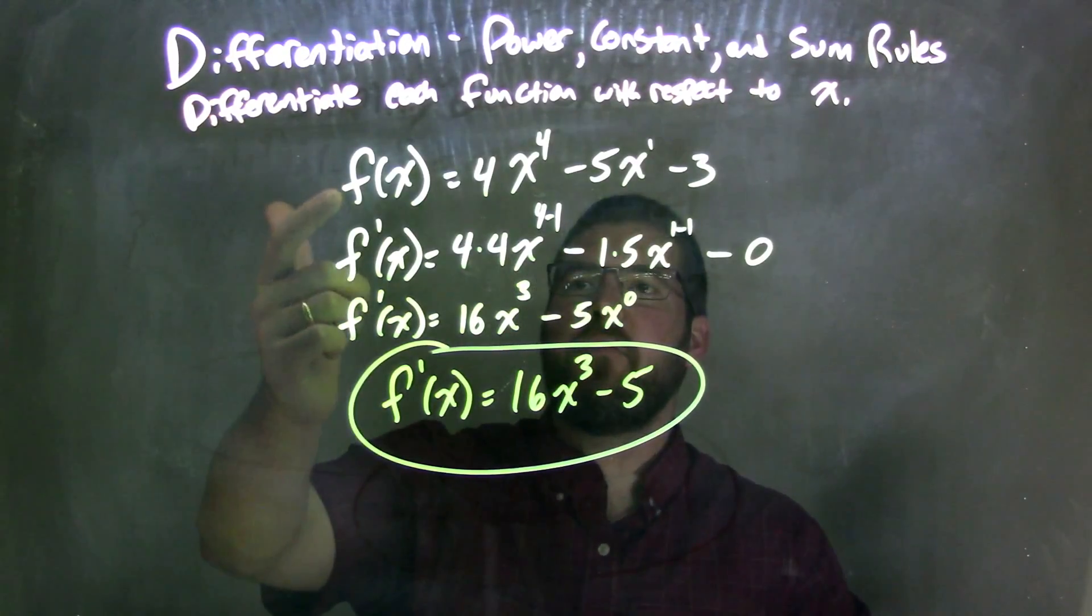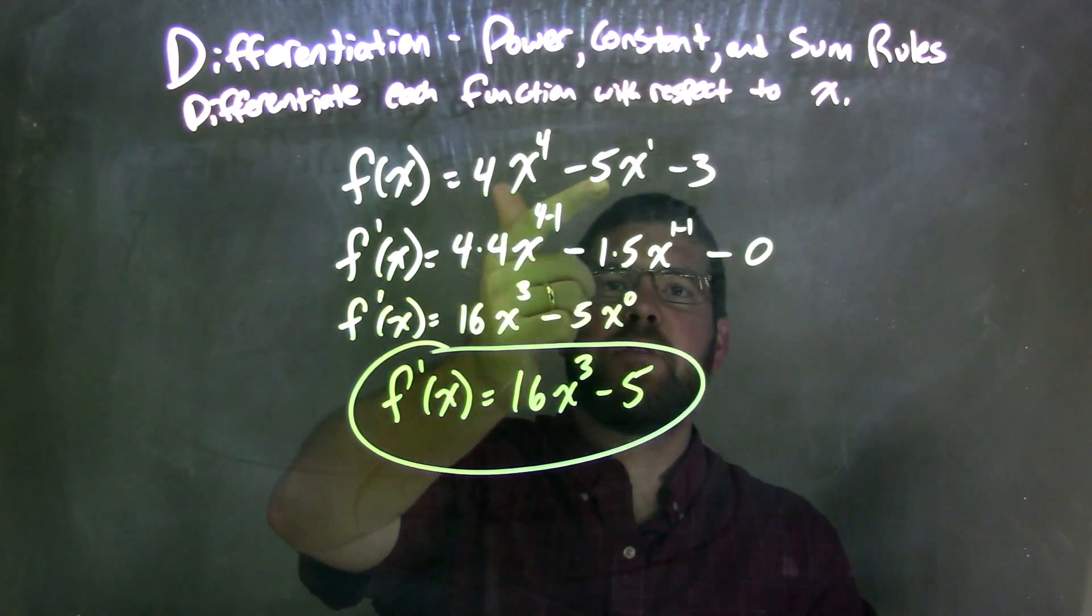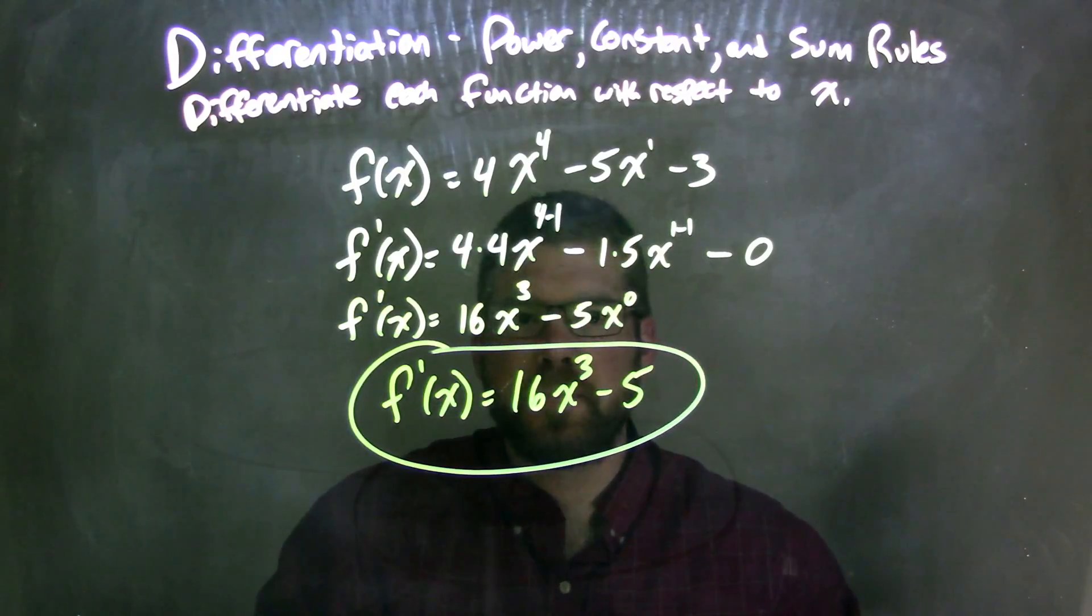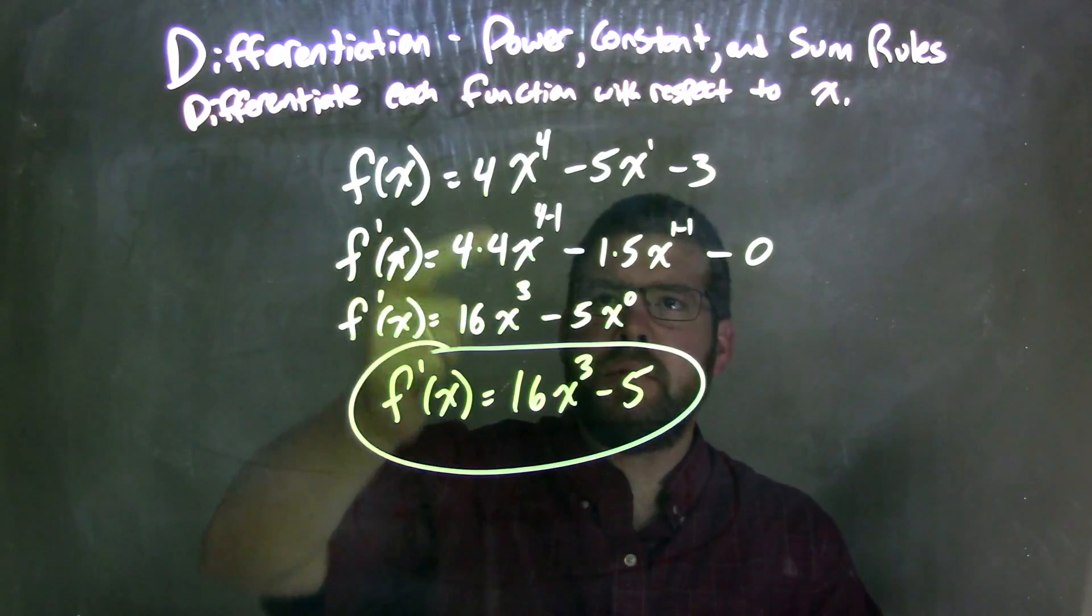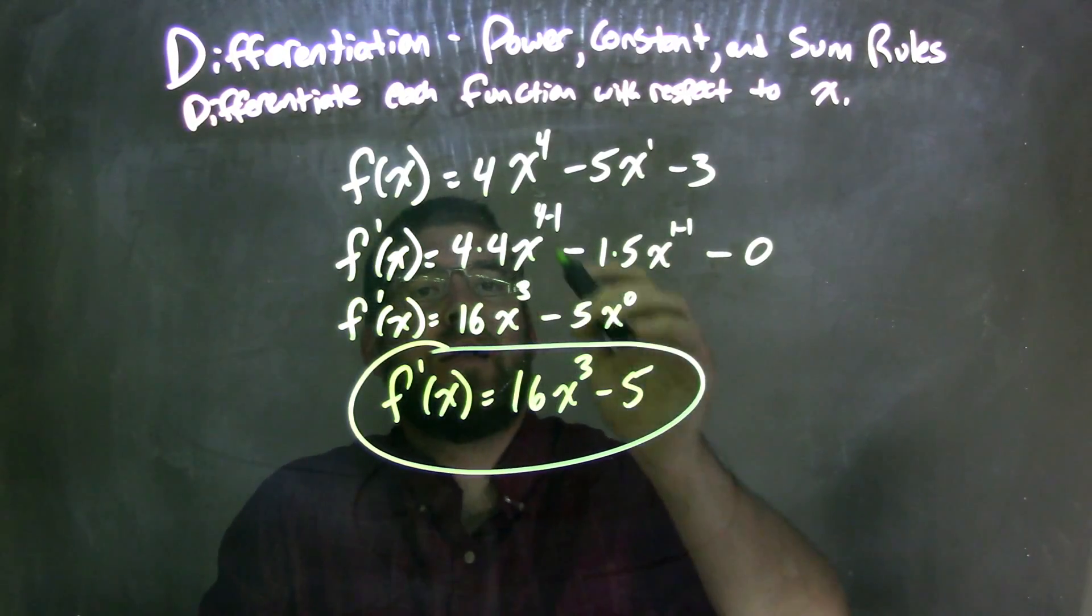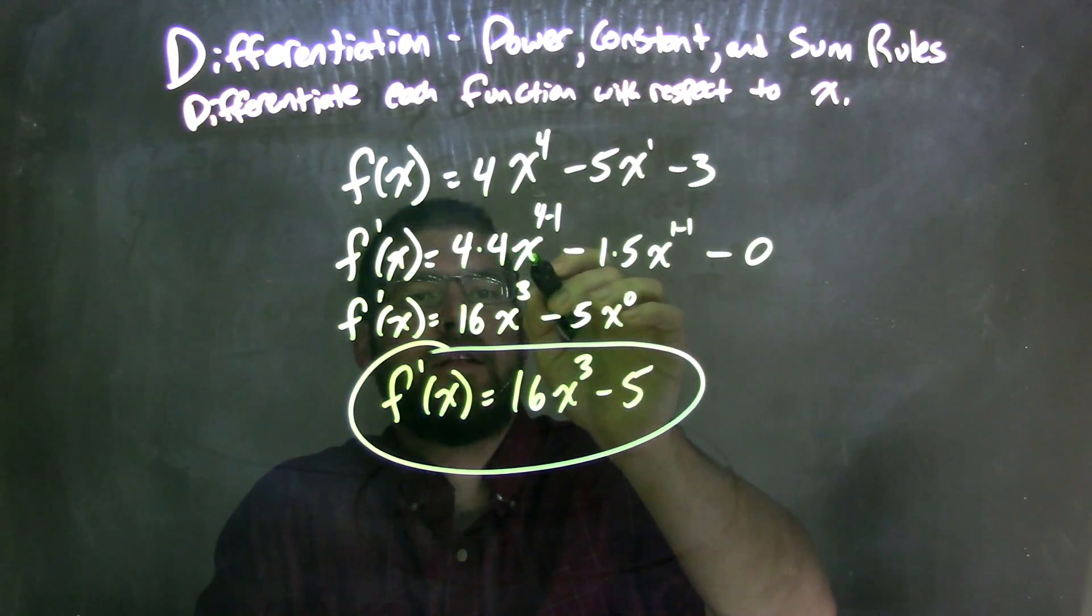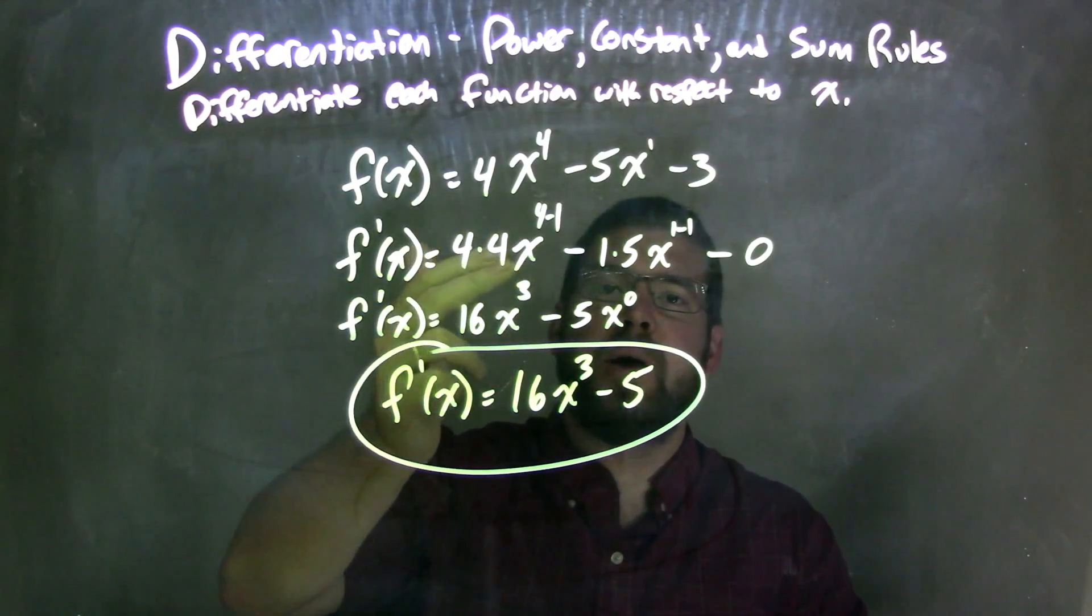So let's recap. We're given f of x is equal to 4x to the 4th minus 5x minus 3. So using the power rule for each one, 4 comes down up front. So we brought the 4 up front, then we multiply it by that 4, and then it's x to the 4 minus 1 power. We take the exponent subtracted by 1.